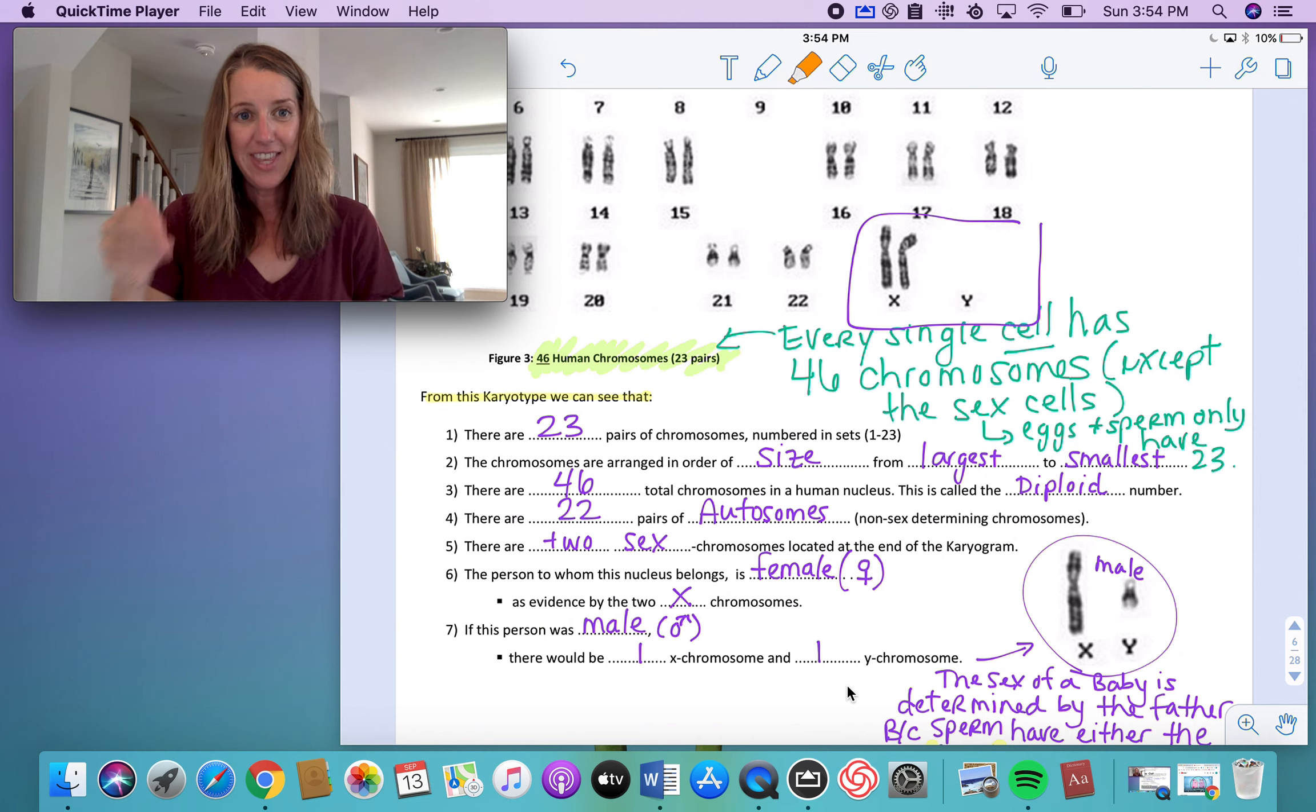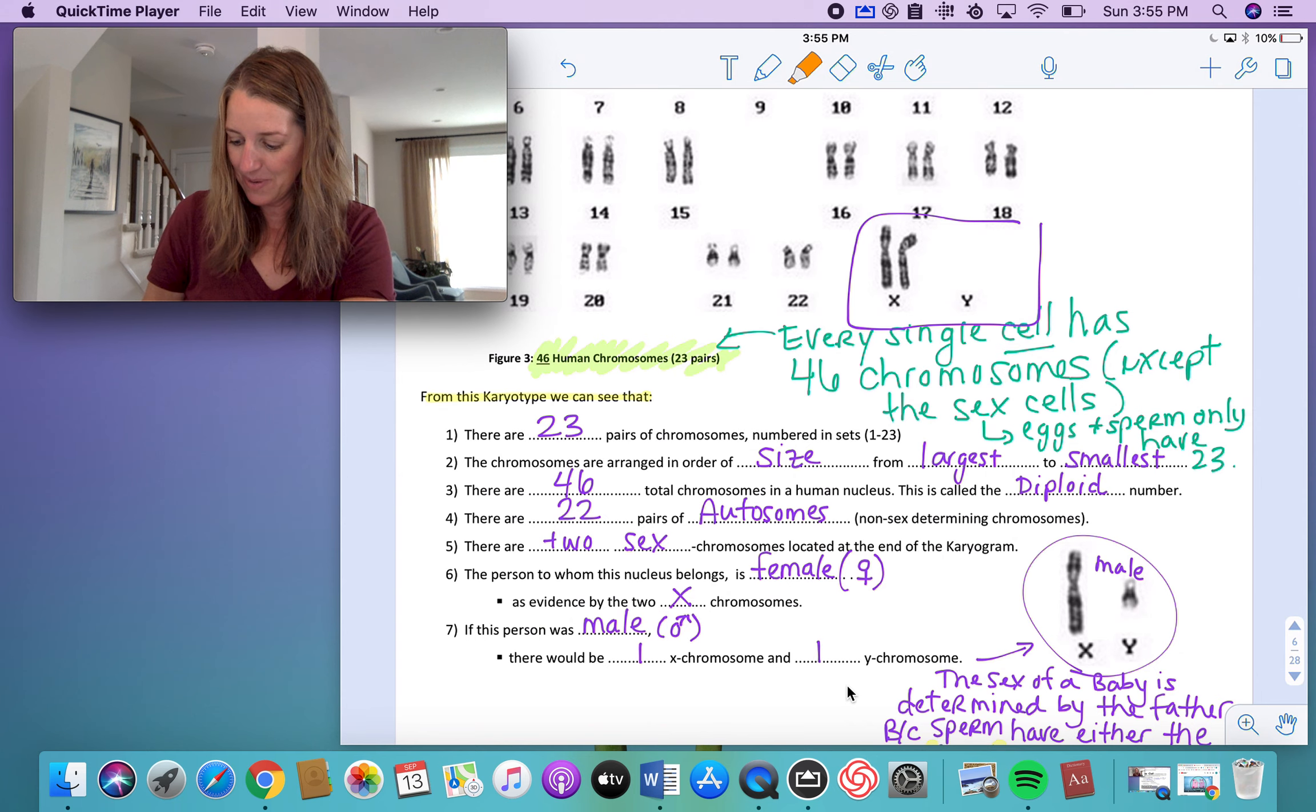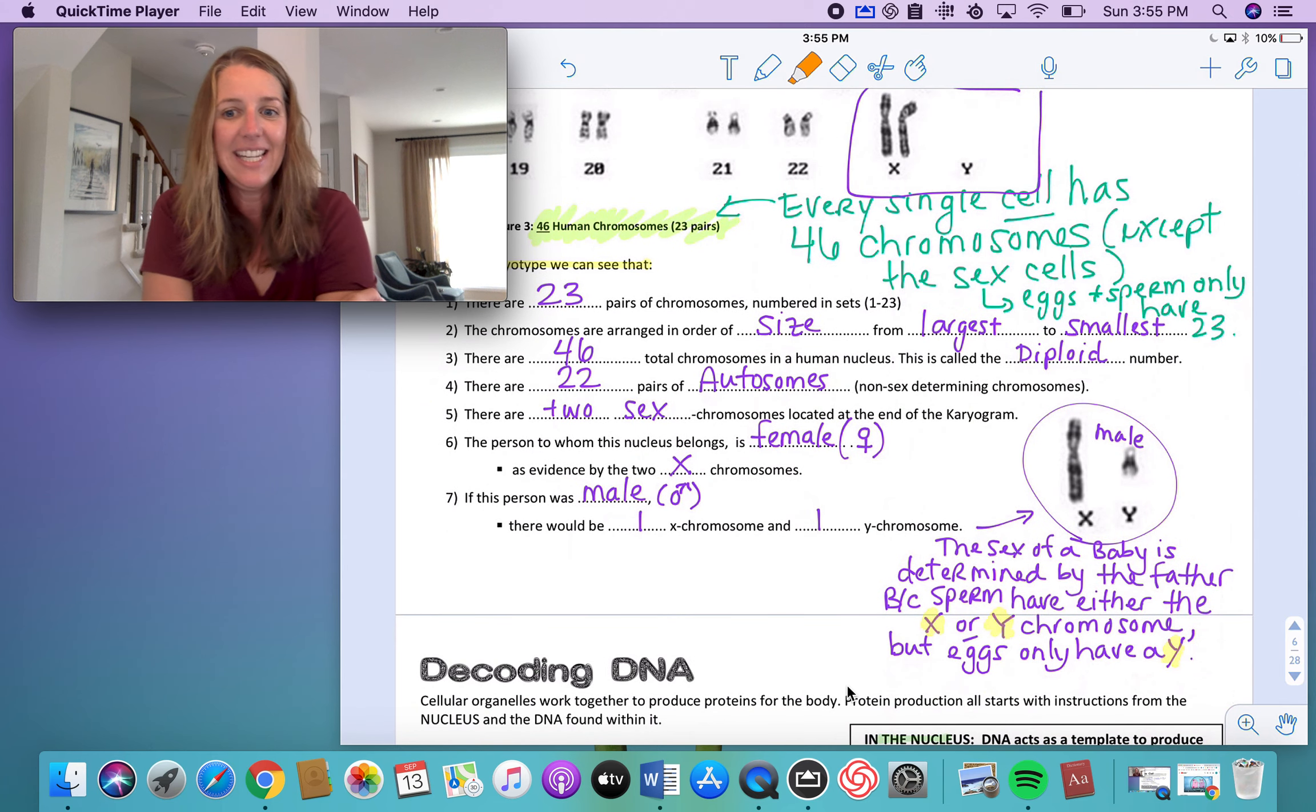So if this person, whose photograph it is of their DNA, has two X chromosomes, do you know if that means that this person is a female or a male? Two X chromosomes mean that you are a girl. And if you have one X and one Y that you can see down at the bottom down here, that means that person is a male. So those sex chromosomes are the only ones that are a little bit different than all of the others.